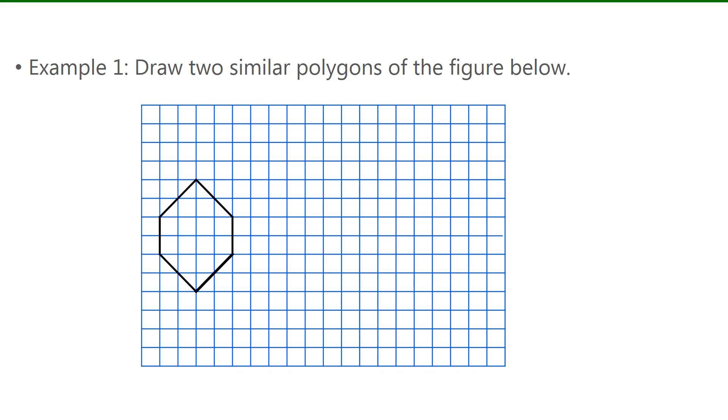Now example one, we have to draw two similar polygons of the figure below. Since a similar polygon is an enlargement or a reduction of another polygon, then we just need to pick a scale factor and then apply that to each side length. Now we normally need to have a ruler and a protractor to make a similar polygon, but here we have a grid, so we can just count blocks.